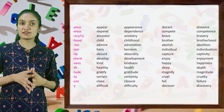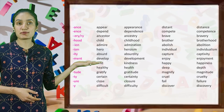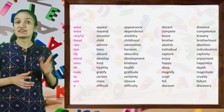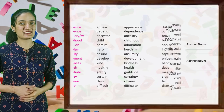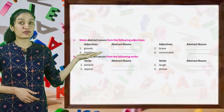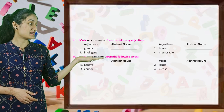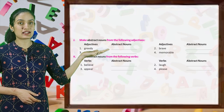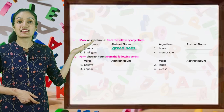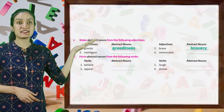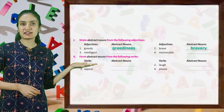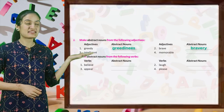So kids, in this way understand the abstract noun formed when a suffix is added to a word — read them and learn them. Now kids, make abstract nouns from the following adjectives. Here are the adjectives and abstract nouns: first, greedy → greediness, brave → bravery. In the same way, form abstract nouns from the adjectives.